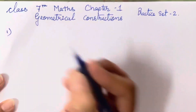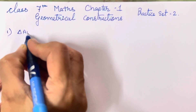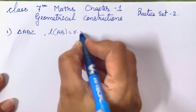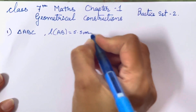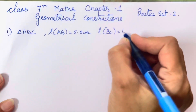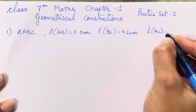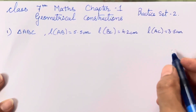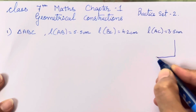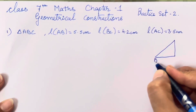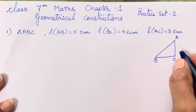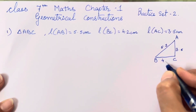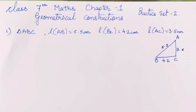Let's start with the first question from practice set number 2, which states: triangle ABC, where length of AB is 5.5 cm, length of BC is 4.2 cm, and length of AC is 3.5 cm. Using the given information we have to draw a rough diagram first. So AC is 3.5, AB is 5.5, and BC is 4.2. Let's construct a diagram using this rough diagram.